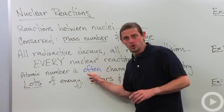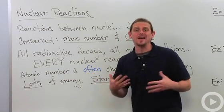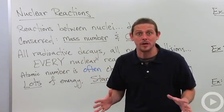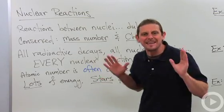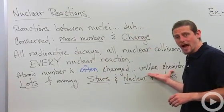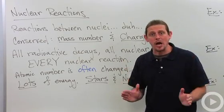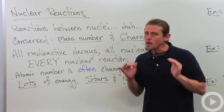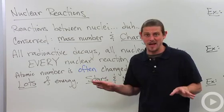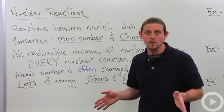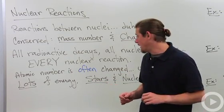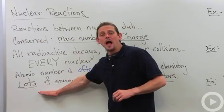We get something called transmutation of the elements, and this is something that cannot happen in a chemical reaction. It is impossible for a chemical reaction to change the atomic number. Nuclear reactions, that's not the case. Almost always will have a change in the atomic number.